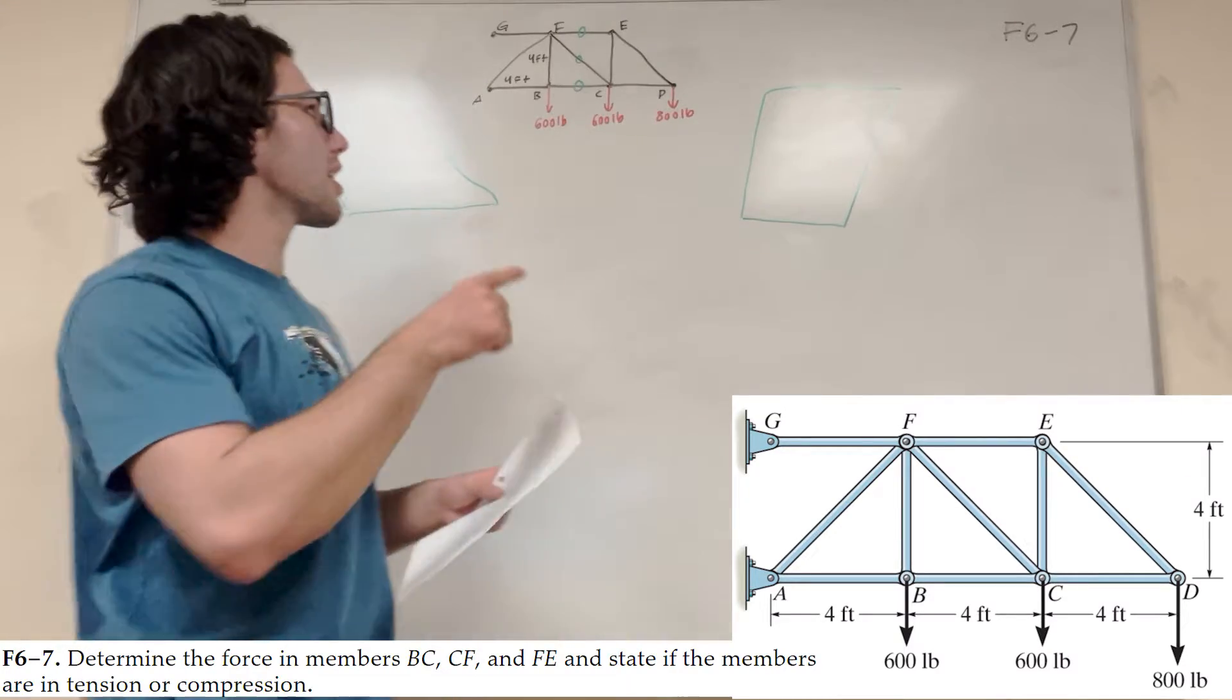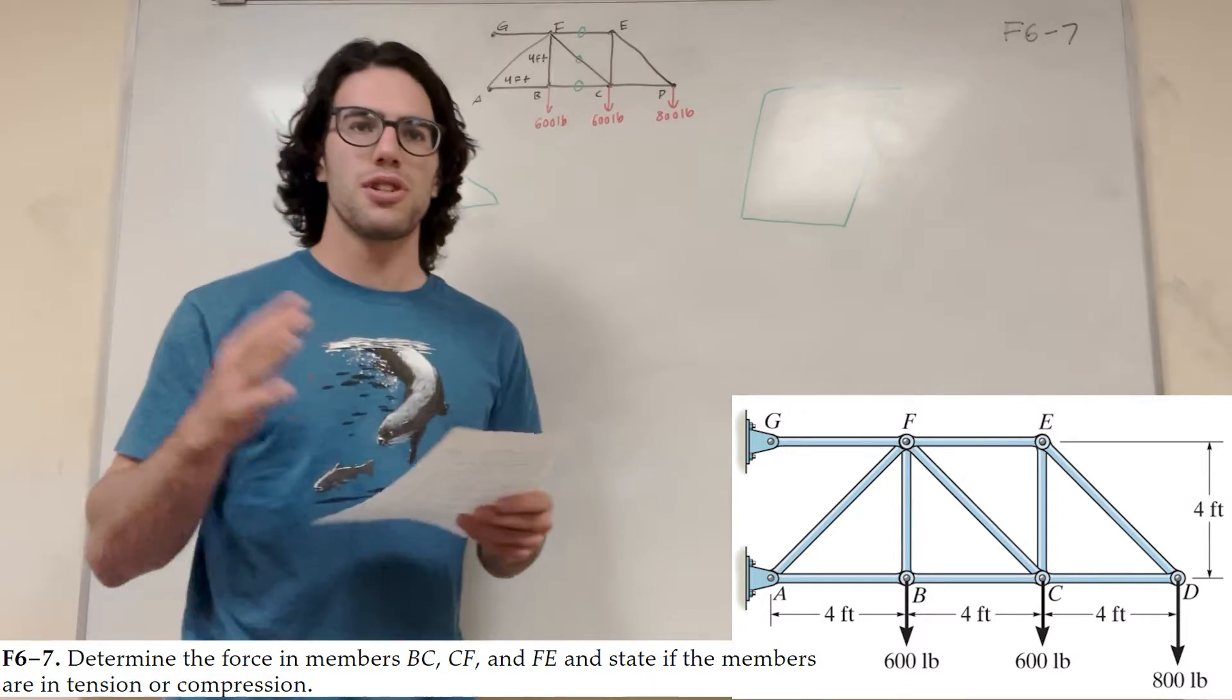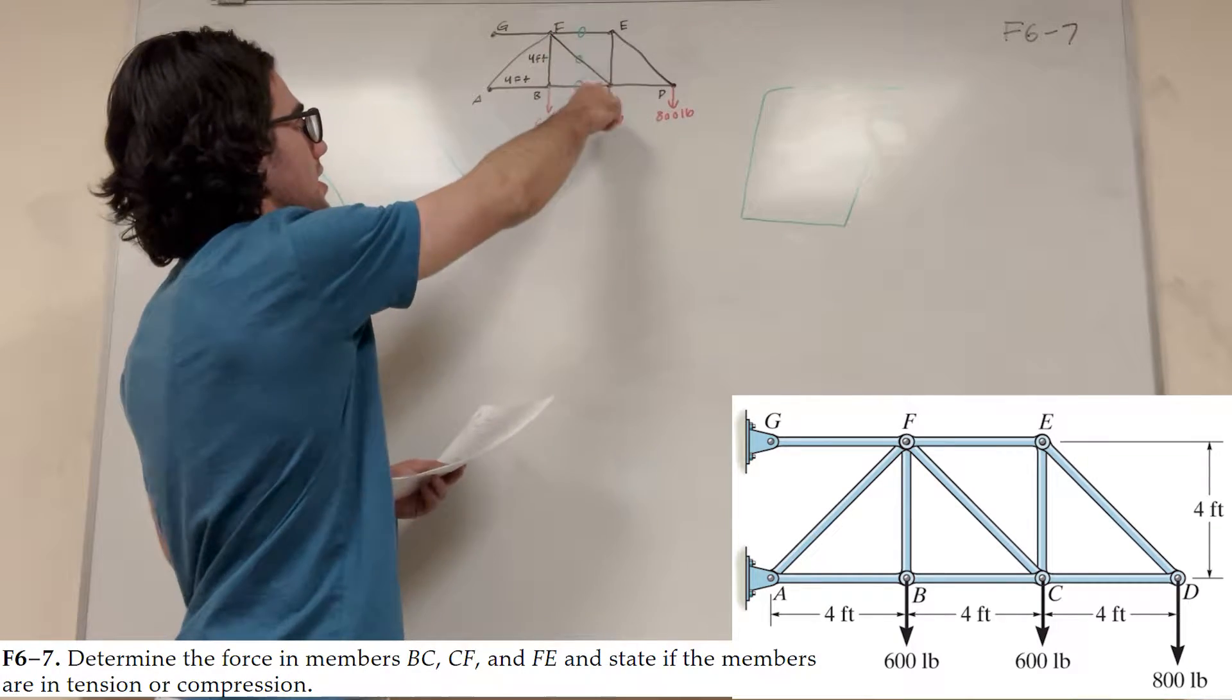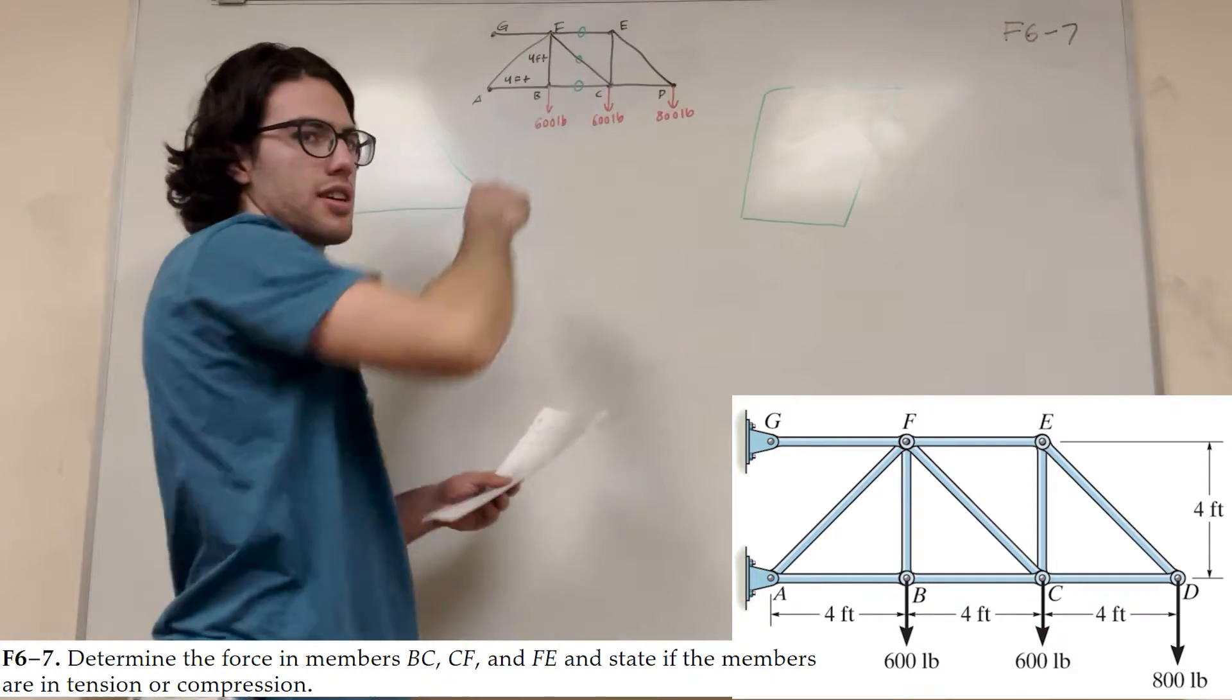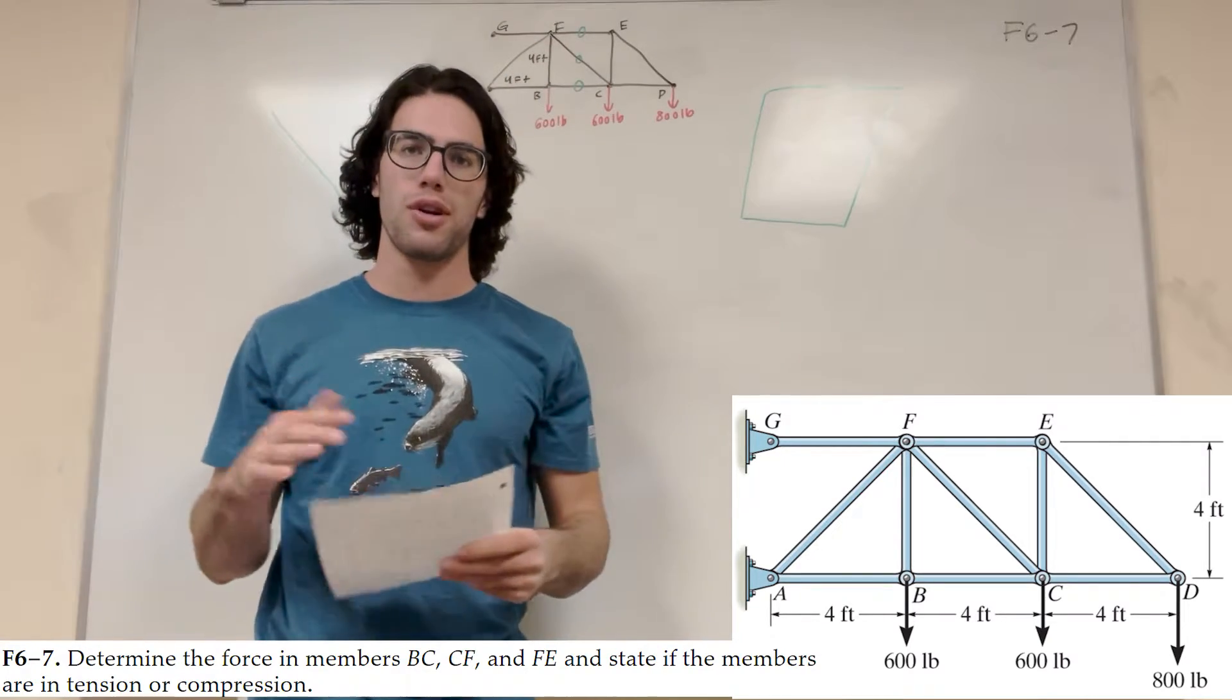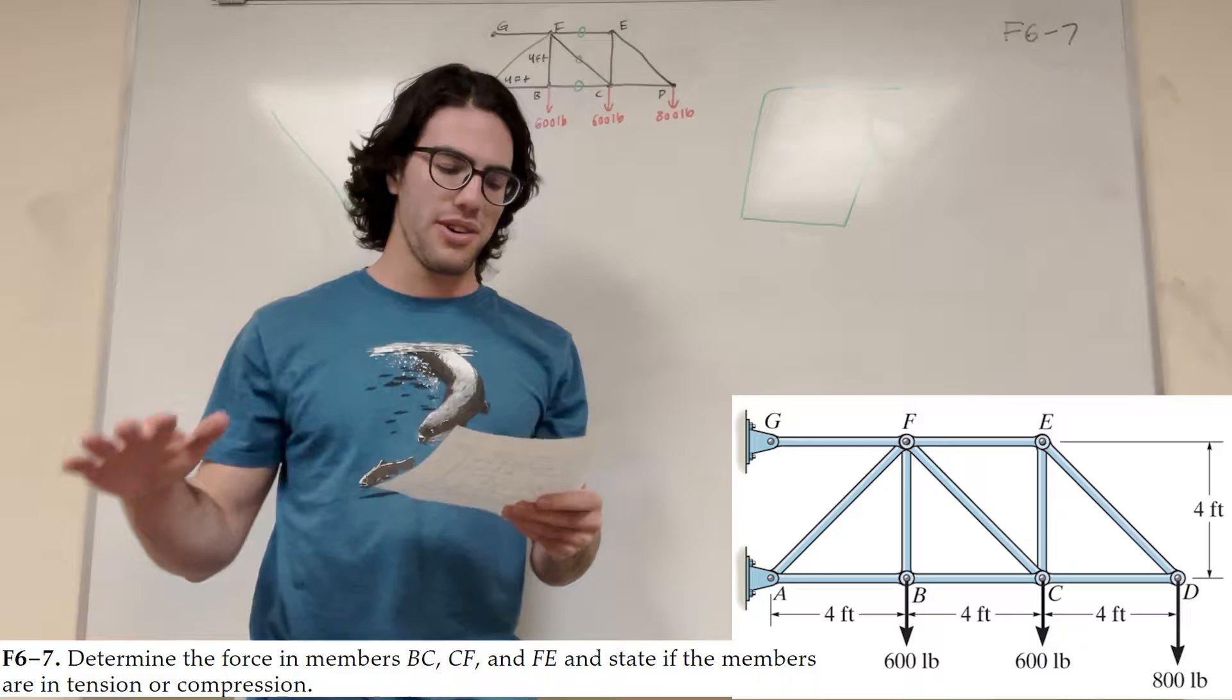What's up Cal gang? Alright, so we got this truss here, and it wants us to find the force in members BC, CF, and EF. So these three ones with a green circle on them, those are the ones that we want to find the force in. So let's go ahead and do it, right?